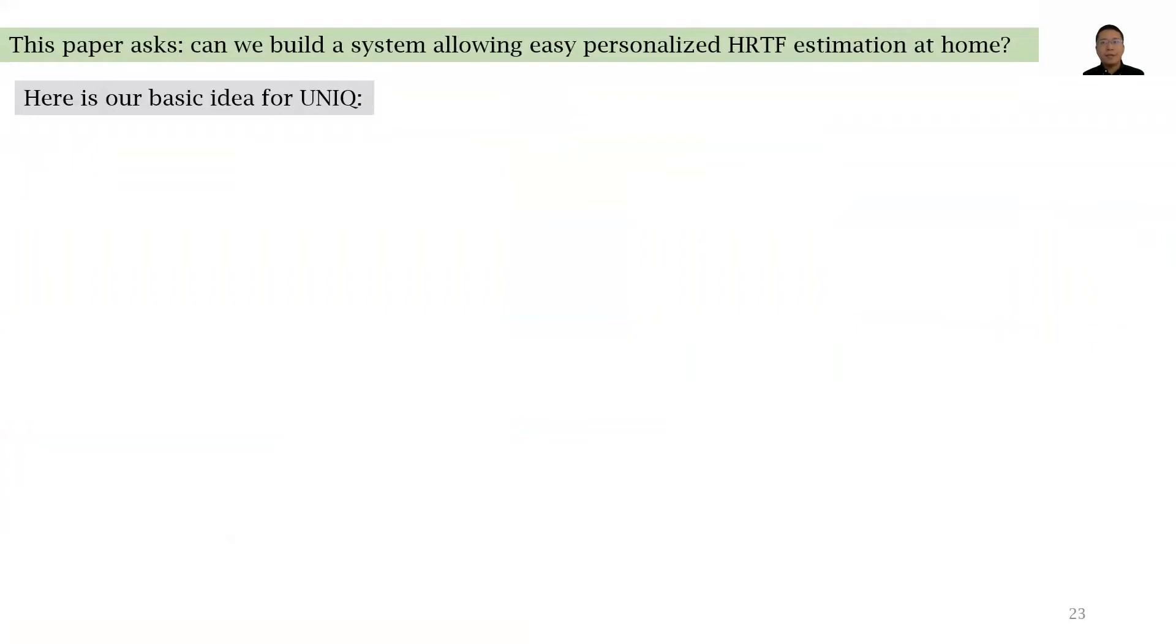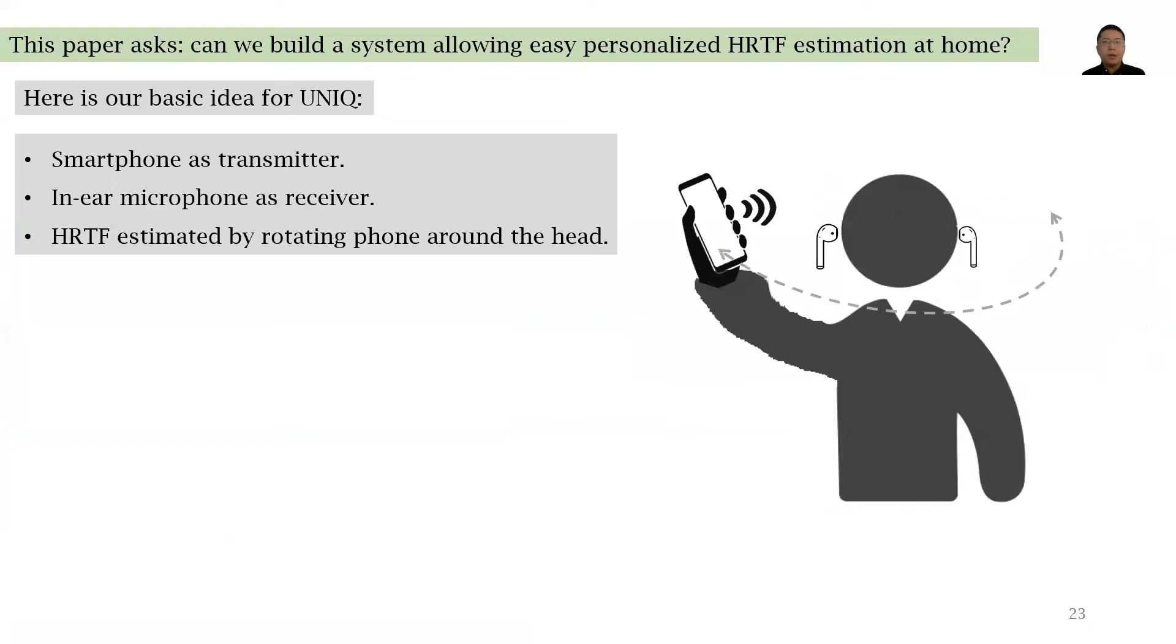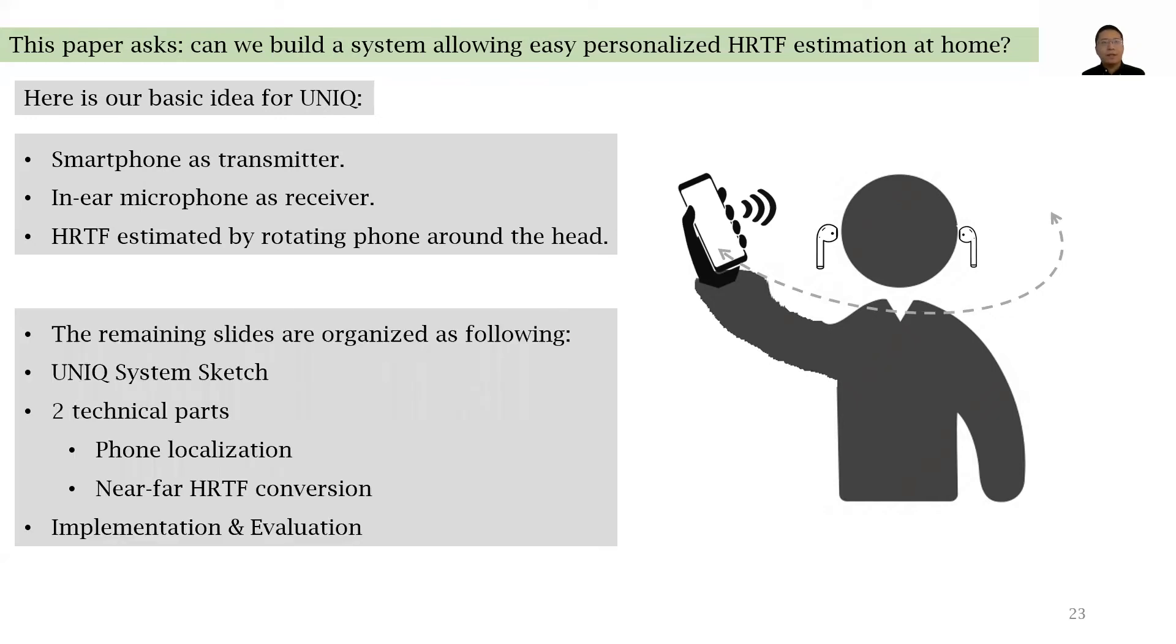And we present our system, UNIC. Here is the basic idea: we will use the smartphone as a transmitter and in-ear microphone as receiver. HRTF is estimated by asking the user to rotate the phone around the head. The remaining slides are organized as the following: I will first talk about UNIC system sketch, then give intuition about two technical parts, namely the phone localization part and the near to far field conversion part. And finally, I will talk about the implementation and evaluation.